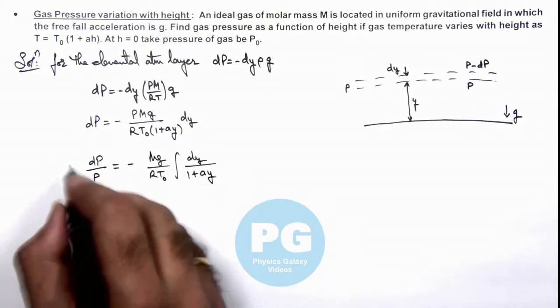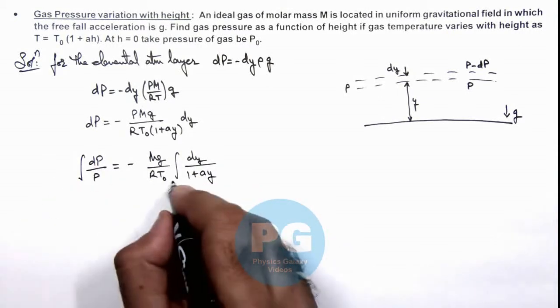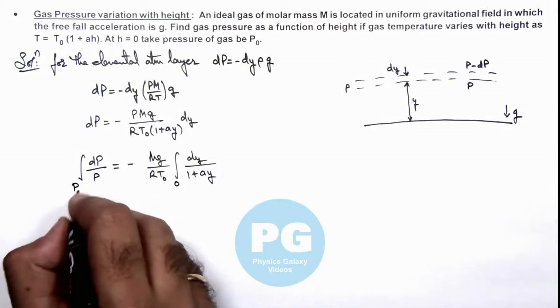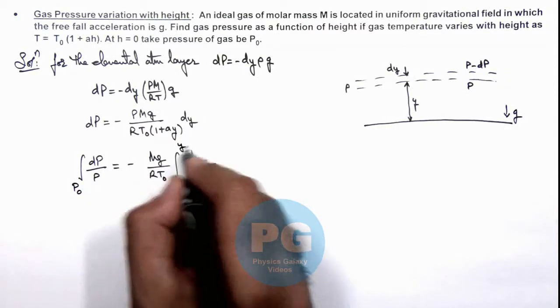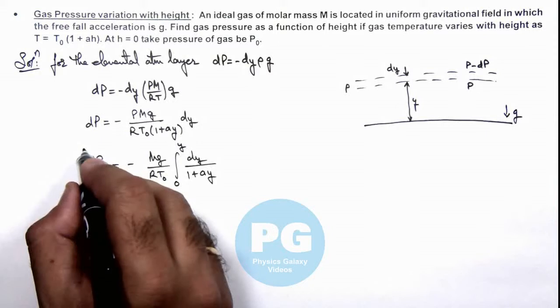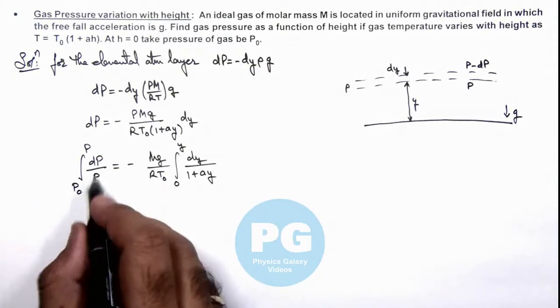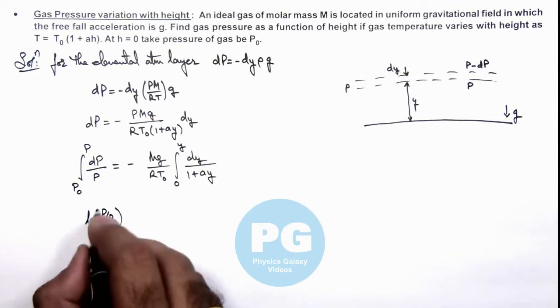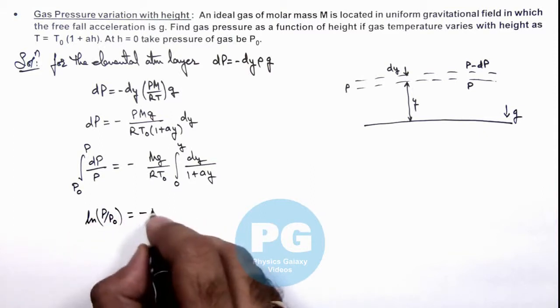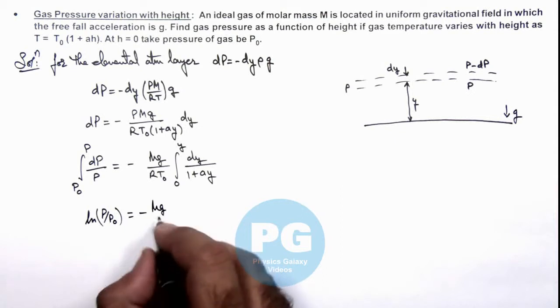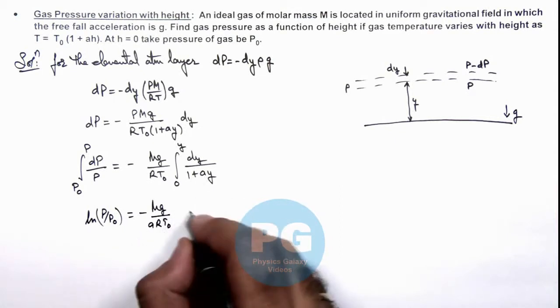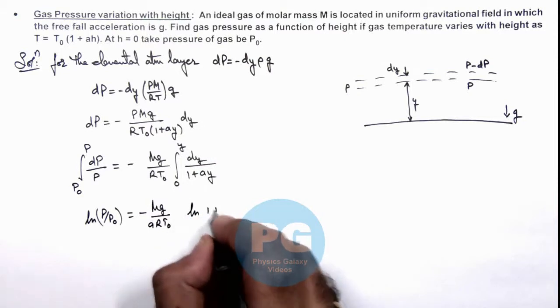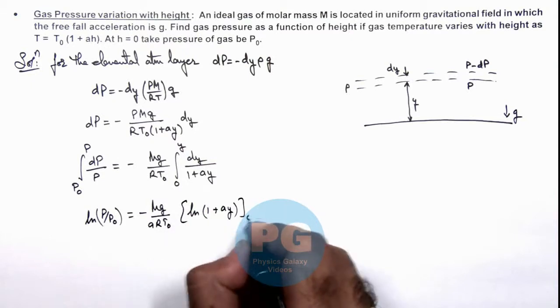At y equal to zero pressure is given to us as P₀ and at a height y it is equal to P. So in this situation left hand side it becomes ln(P/P₀), and right hand side is minus Mg/(αRT₀) and this becomes ln(1 + αy), and we can substitute the limits from zero to y.